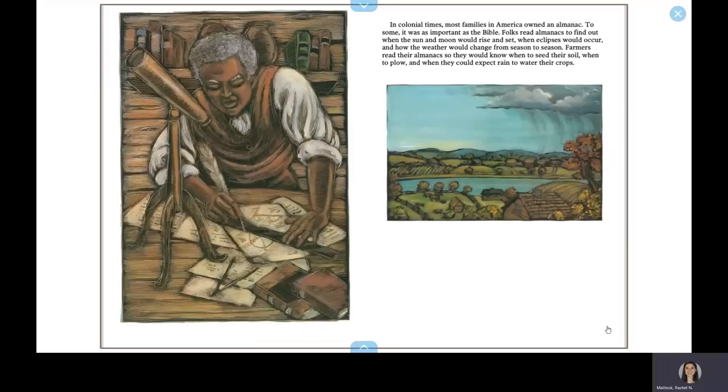In colonial times, most families in America owned an almanac. To some, it was as important as the Bible. Folks read almanacs to find out when the sun and moon would rise and set, when eclipses would occur, and how the weather would change from season to season. Farmers read their almanacs so they would know when to seed their soil, when to plow, and when they could expect rain to water their crops.